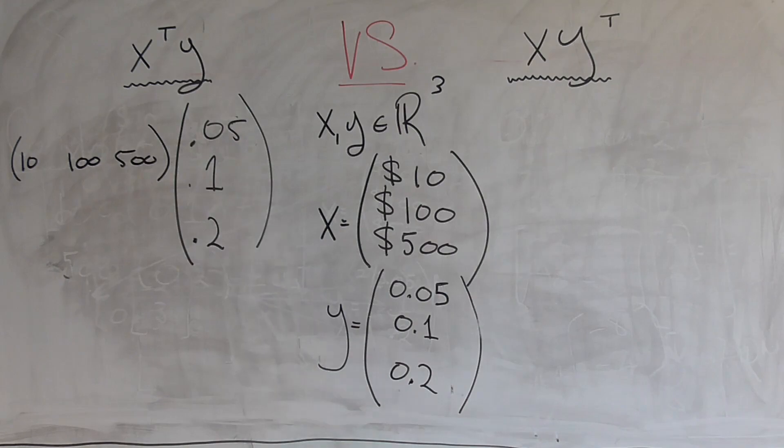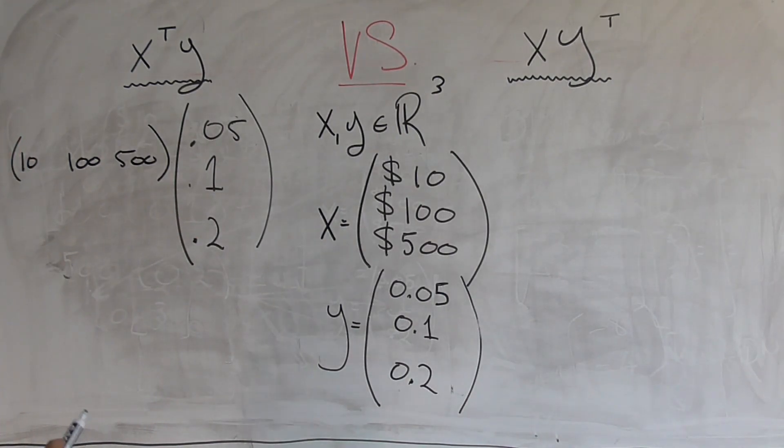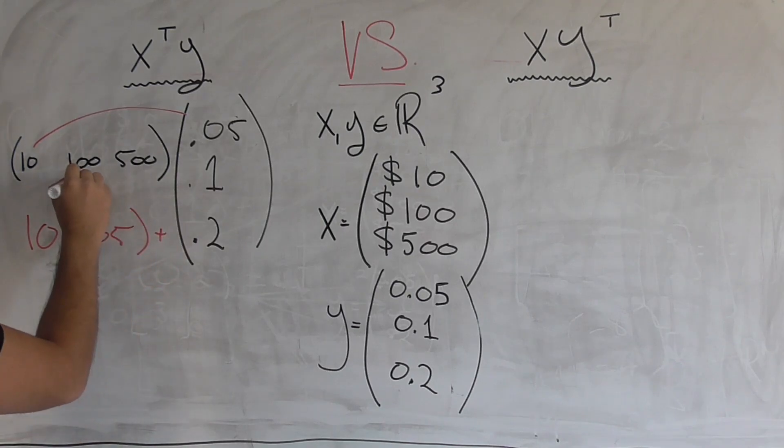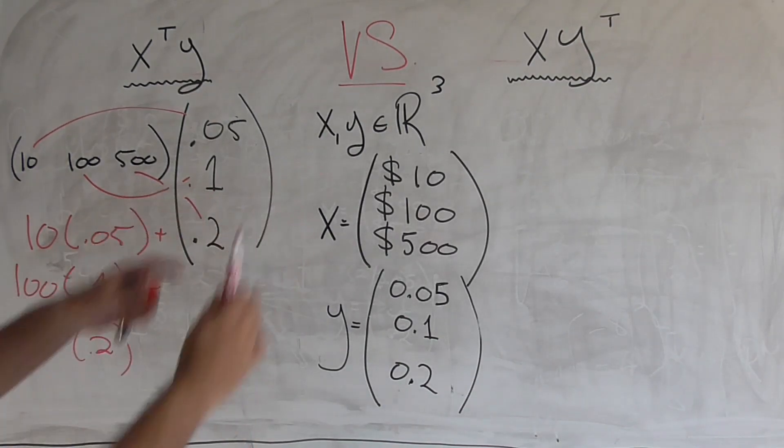Now this, some of you might know this as a dot product, or mathematically it's also known as an inner product. We solve it by basically doing, let me use a different color here. We do this first component times this first component, so that's going to be 10 times 0.05. We add that to the second component times the second component, so it's going to be 100 times 0.1. And, as you might have guessed, the third component times the third component, so that's going to be 500 times 0.2.